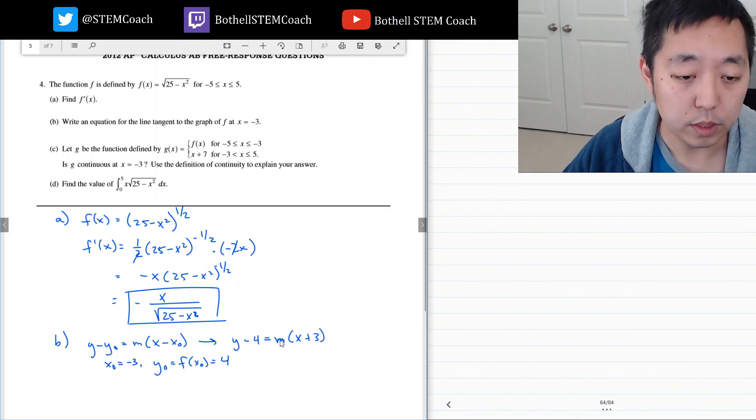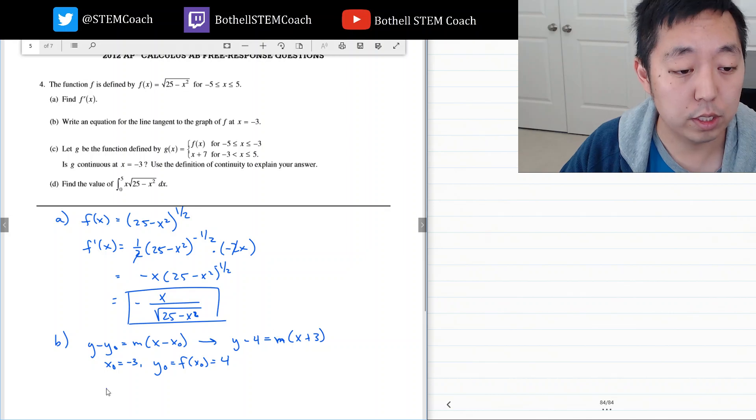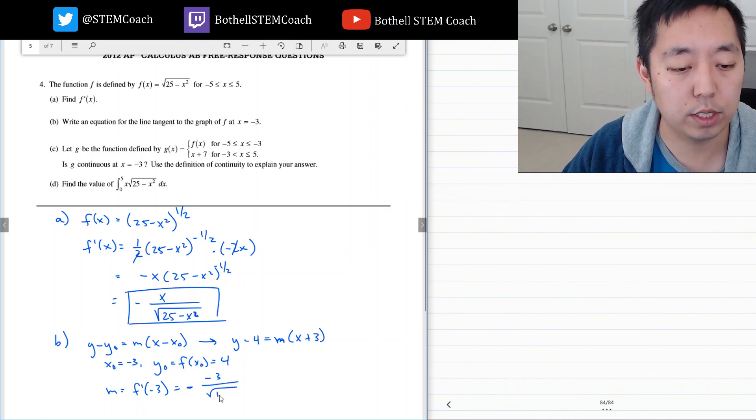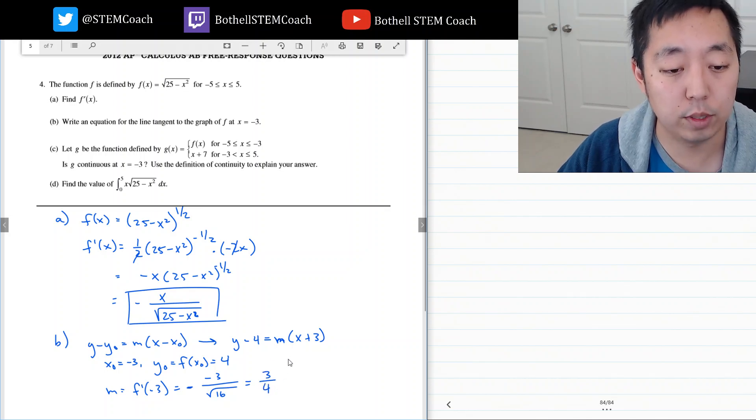So then this equation transforms into y minus 4 equals m times x minus negative 3 which makes it plus 3. Now I need the slope. The slope is given by f derivative at x equals negative 3. That becomes negative negative 3 divided by the square root of 16 which we said was 4. So that's positive 3 over 4. So we plug that into m. So now this equation becomes y equals 3 fourths x plus 3 plus 4.